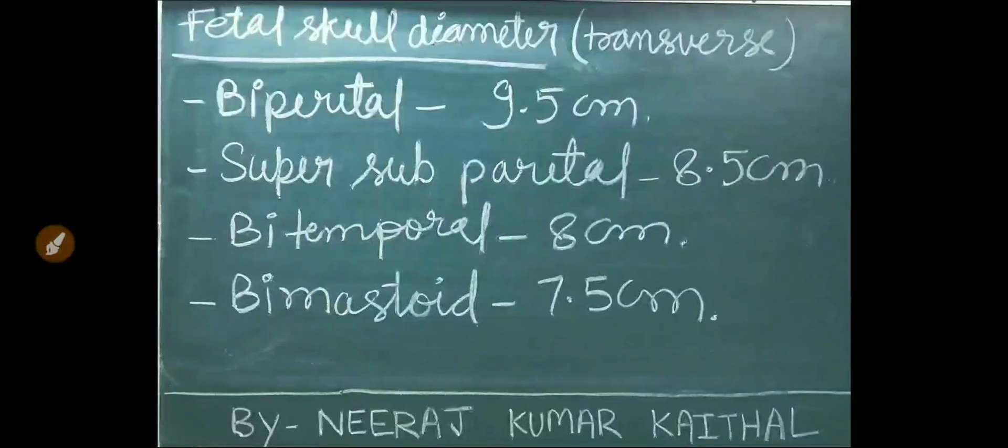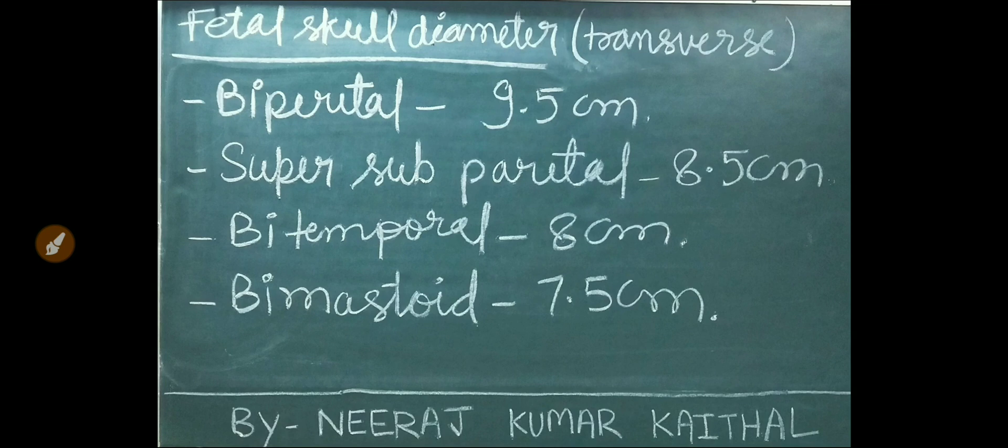Transverse fetal skull diameters: Biparietal 9.5 cm, Supersubparietal 8.5 cm, Bi-temporal 8 cm, Bi-mastoid 7.5 cm.